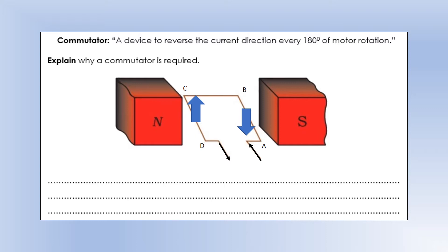Every electric motor has a device called a split ring commutator, or commutator for short, which reverses the current direction every 180 degrees of rotation. Let's look at why that's necessary. This diagram shows what the motor looks like after it has rotated 180 degrees — A, B, C, and D have moved from their starting positions, but the current is still going from A to D.